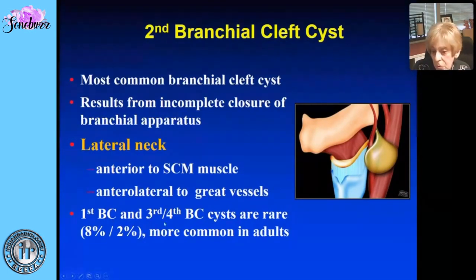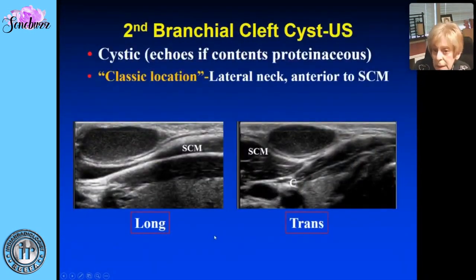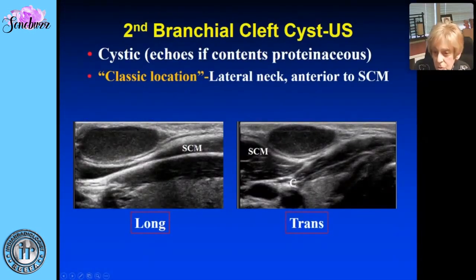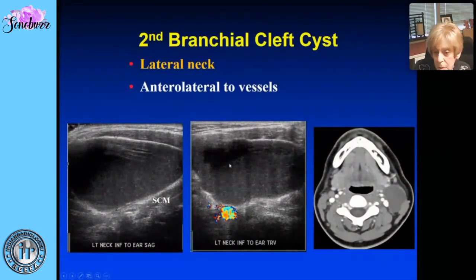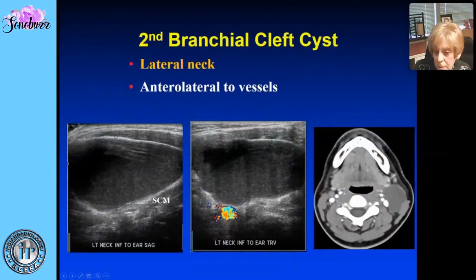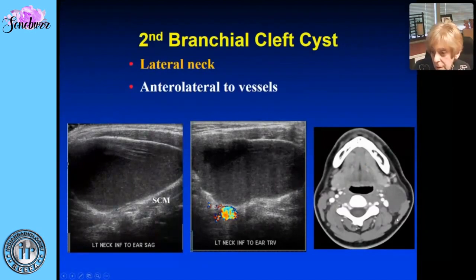About 8 percent of branchial cleft cysts arise from the first arch or cleft, and 2 percent arise lower down — they're really rare, more common in adults. Here is a patient with a lateral neck mass: it's cystic, there may be a few echoes due to protein. The classic location is lateral neck, anterior to the sternocleidomastoid muscle. On CT you can also see it is lateral to the vessels — the same finding we see on ultrasound.